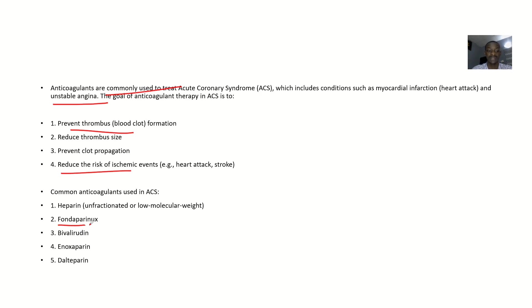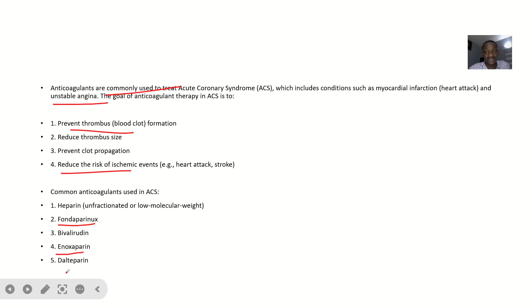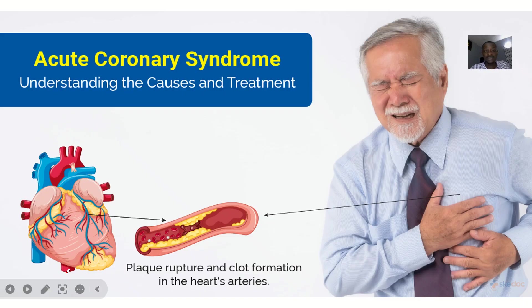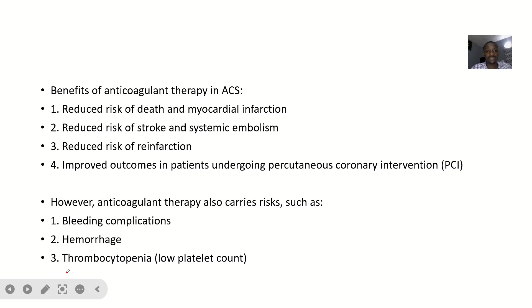Common anticoagulants used in acute coronary syndrome include heparin, fondaparinux, bivalirudine, enoxaparin, and dalteparin.